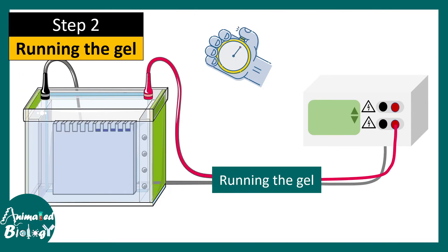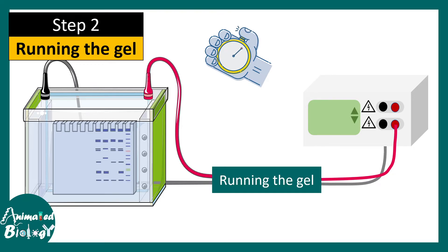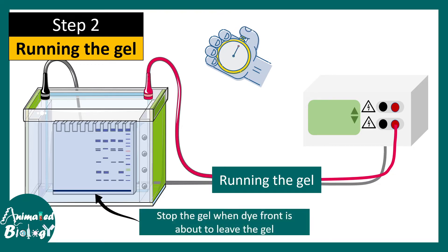The final part of step two is to run the gel. The gel is run at around 200 volts for about half an hour. Someone should monitor the gel while it is running, and when the dye front leaves the gel it is time to stop.